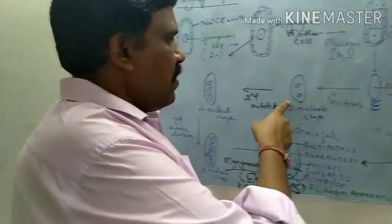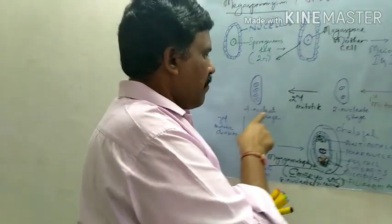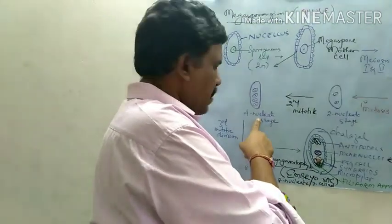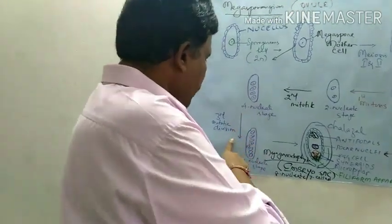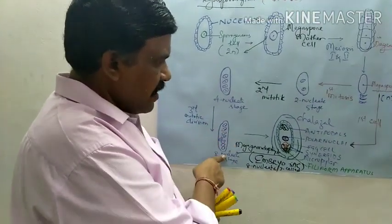They go for the first mitosis — 2-nucleate stage. Second mitosis — 4-nucleate stage. Third mitosis — 8-nucleate stage.